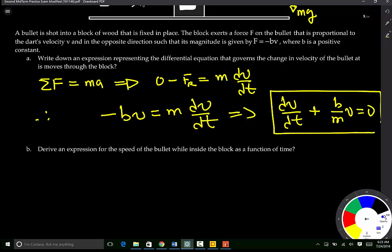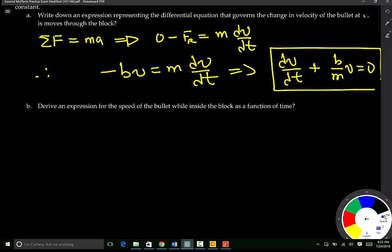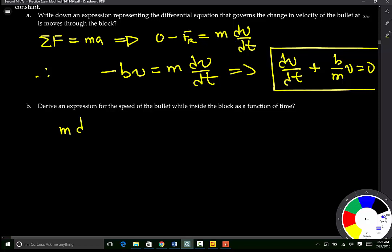Now, the next question says we need to derive an expression for the speed of the bullet while inside the block as a function of time. What do we know? We know that M dV/dt is equal to negative bv, which basically means that dV/dt is equal to negative B over M, all multiplied by v.